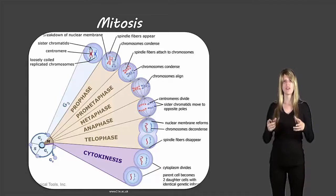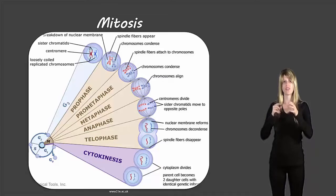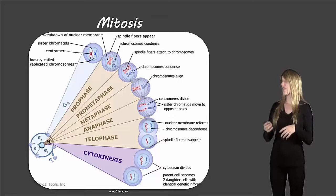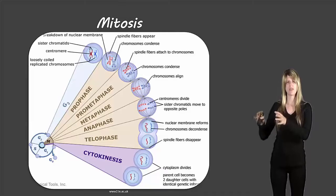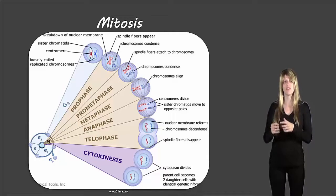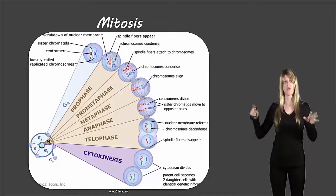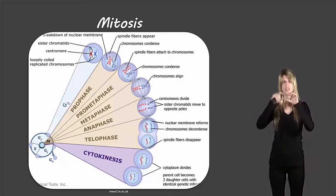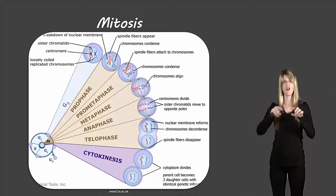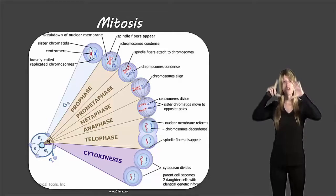In telophase, the membrane starts to form back around the chromosomes, and the different organelles start to move toward the different poles. Finally, we have cytokinesis — our third step of the cell cycle. This is when all of the organelles are completely separated to the poles and the cell membrane starts to pinch off, creating two separate cells. What was one big oval cell pinches off in the middle to create two separate round cells.